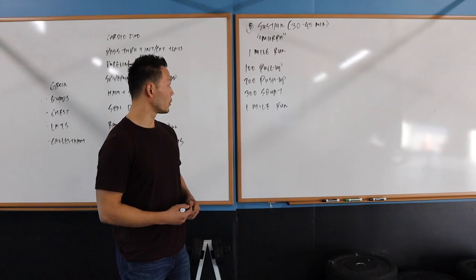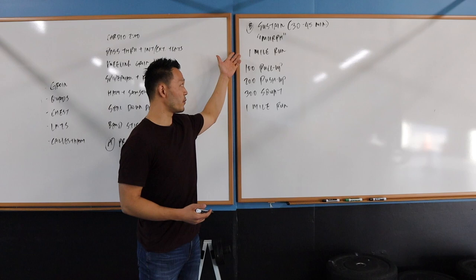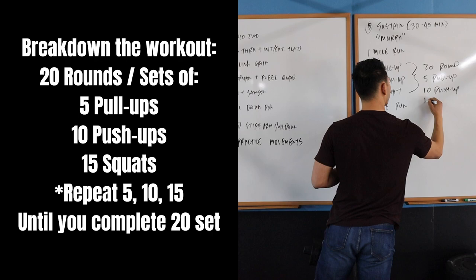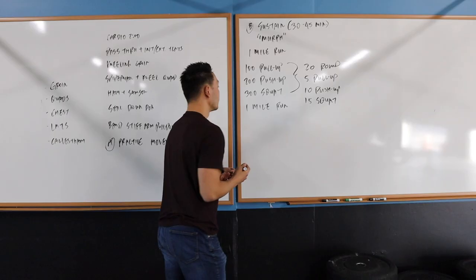Traditionally for CrossFit, you either finish one mile, complete 100 pull-ups, 200 push-ups, 300 squats in a row, then finish another mile, or you break these middle sections into smaller chunks. The typical breakdown is 20 rounds of 5 pull-ups, 10 push-ups, 15 squats. Obviously 20 rounds is a lot.